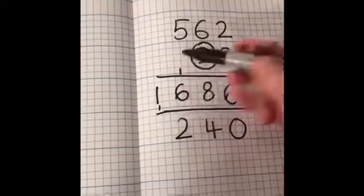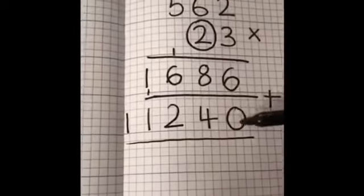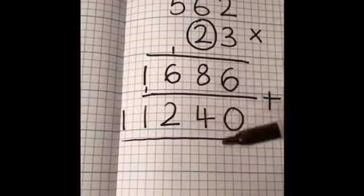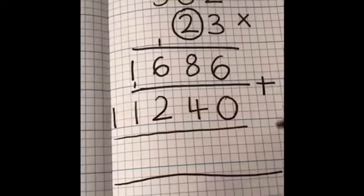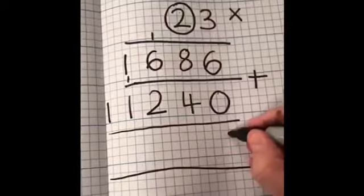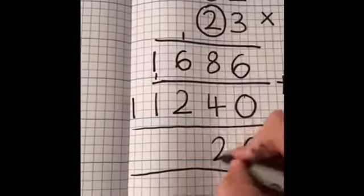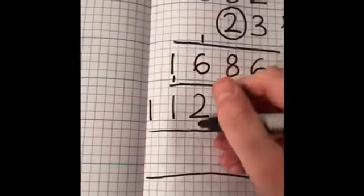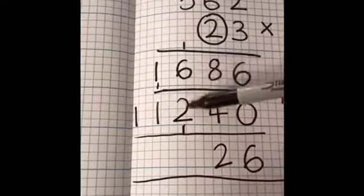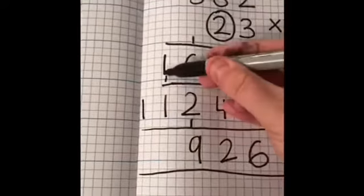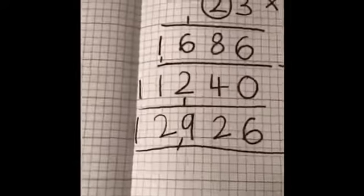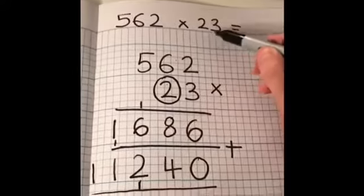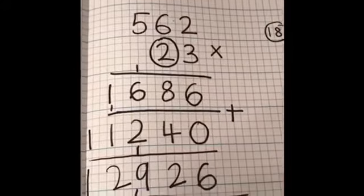You could rewrite this question out again, but as you can see, mine's quite neat and I can clearly see what numbers I've got to add together. So I'm just going to add these two numbers together: 6 add 0 is 6, 8 add 4 is 12, 6 add 2 is 8 add my 1 is 9, then 1 add 1 is 2. So my answer is 12,926. Therefore, 562 times 23 equals 12,926.